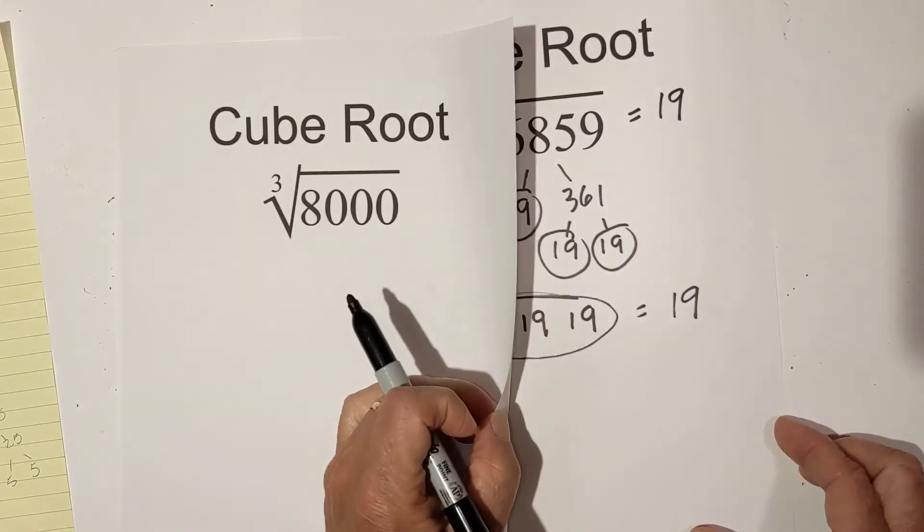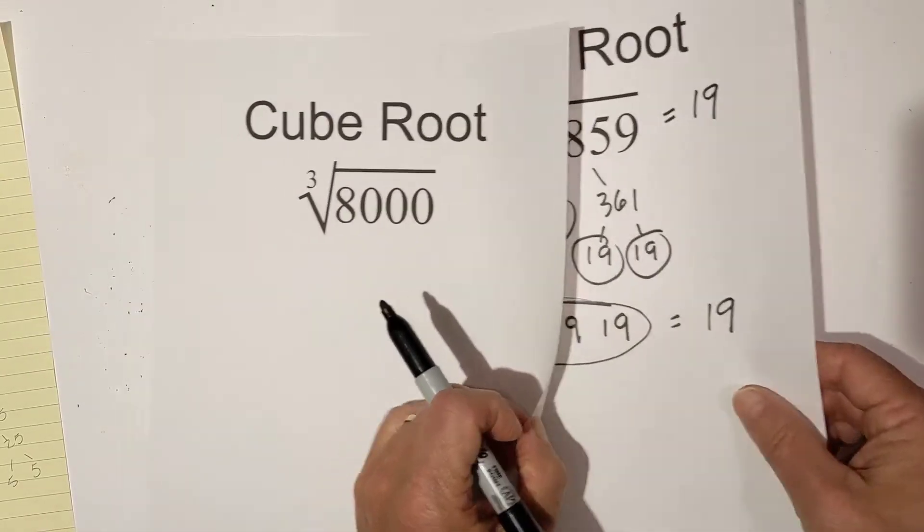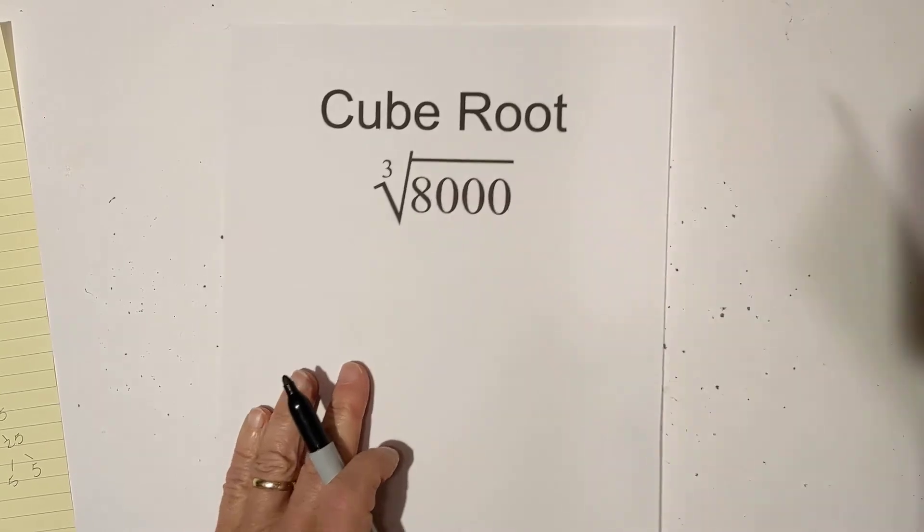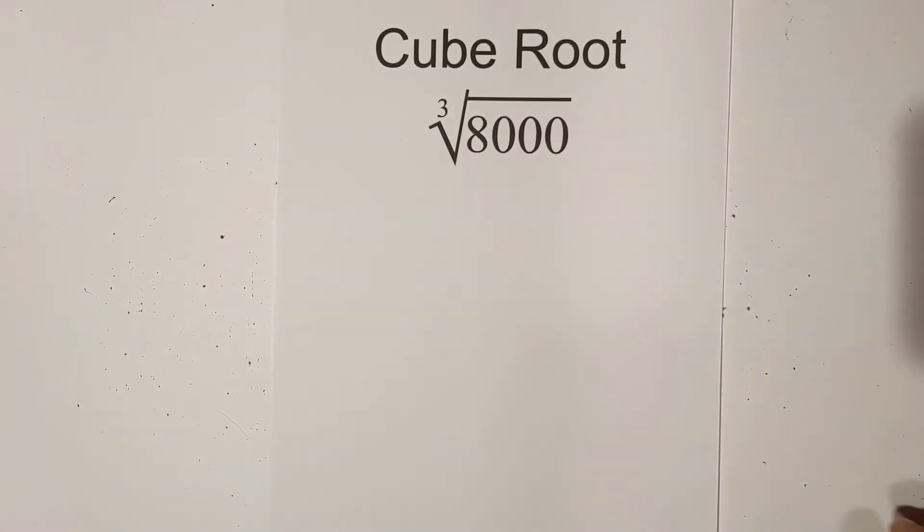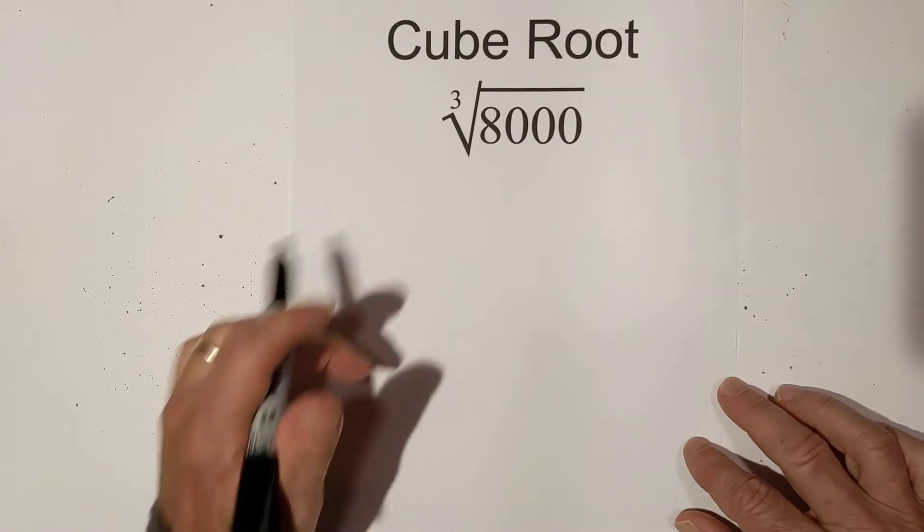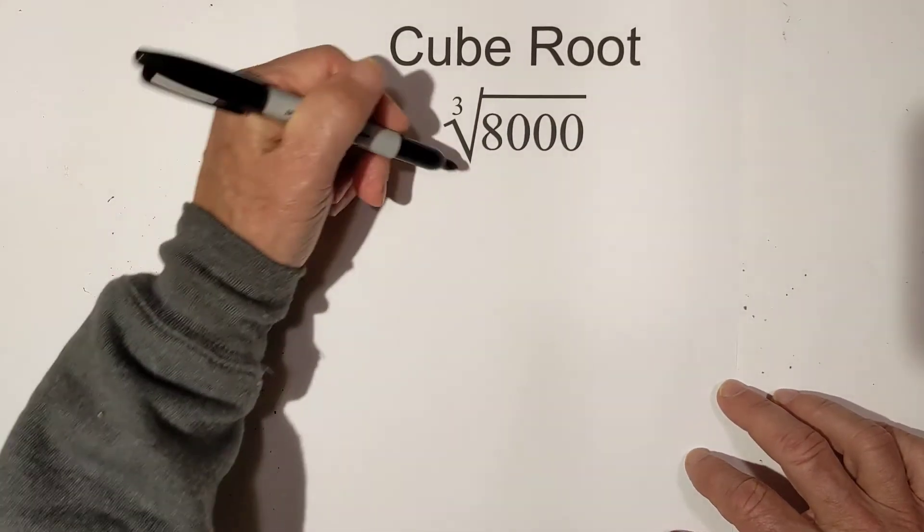Now let's take a look at 8,000 and let's do the same thing. 8,000 ends in zero so I am going to begin with 2's.